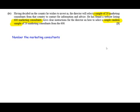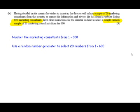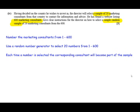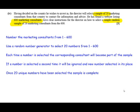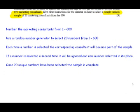First, number the marketing consultants from 1 to 600. Next, use a random number generator to select 20 numbers from 1 to 600. Each time a number is selected, the corresponding consultant becomes part of the sample. If a number is selected a second time, it will be ignored and a new number selected in its place — a consultant cannot be in the sample twice. Once 20 unique numbers have been selected, the sample is complete.